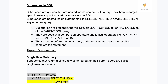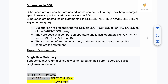Sub queries are present in the WHERE clause, FROM clause, or HAVING clause of the parent SQL query. They are used with comparison operators — you can use equal to, less than, greater than, greater than ALL, IN, ANY, ALL, and so on. Sub queries execute before the outer query at runtime and pass the result to complete the statement. The inner query executes first, its output is returned, and then the outer query runs.